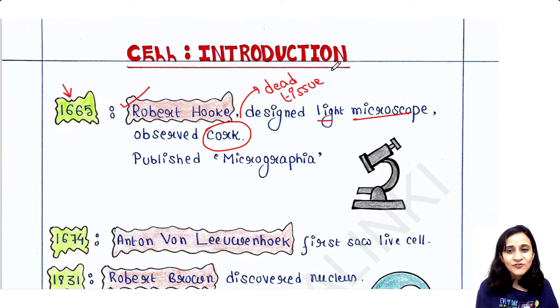He observed dead cells for the first time under microscope and he published his book that is Micrographia. It was a very famous book at that time. He used to observe bark cells under microscope, and then he took some images. At that time, how did he take images? He has drawn some pictures and then published those pictures in a book, and that book was named Micrographia.